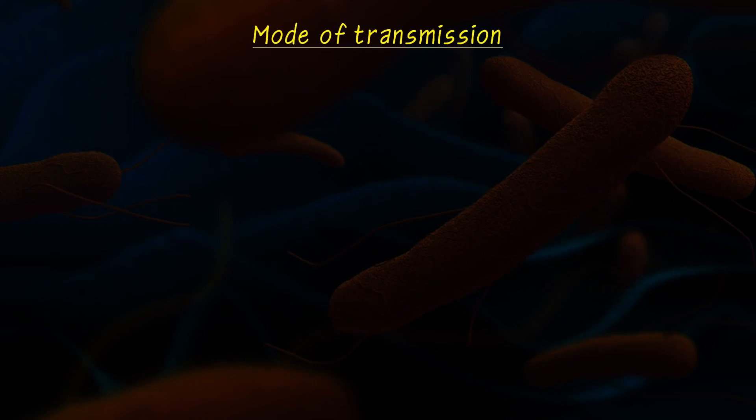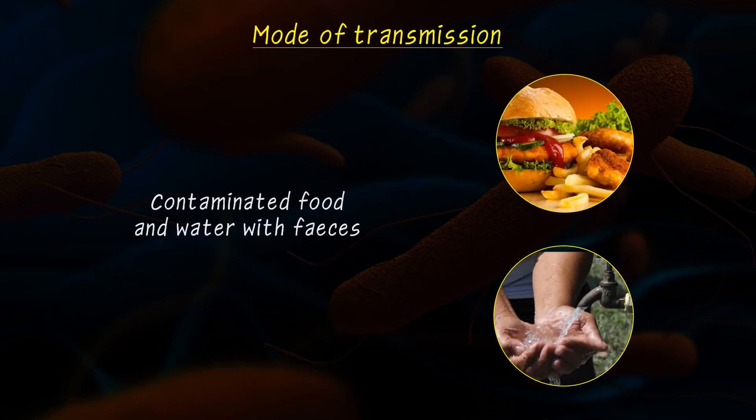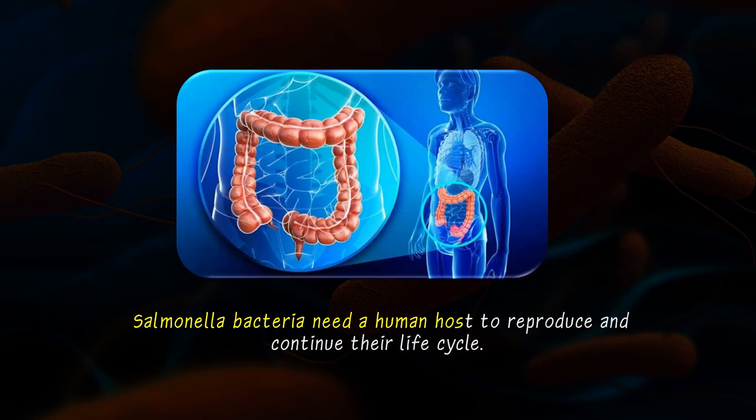Now let's see the mode of transmission. It is mainly caused by contaminated food and water with feces from infected patients and carriers. These bacteria can survive in sewage or contaminated water for weeks, but they cannot grow and reproduce there because they need a human host to reproduce and continue their life cycle.